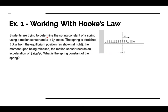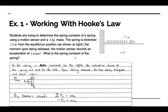Let's look at an example: working with Hooke's Law. Students are trying to determine the spring constant of a spring using a motion sensor and a two-kilogram mass. The spring is stretched 1.5 meters from the equilibrium position. Upon being released, the motion sensor records an acceleration of 1.6 meters per second squared. We want to find the spring constant. Since Hooke's Law involves forces, we'll need Newton's second law. As the spring is stretched to the right, the restorative force acts to the left. The free body diagram shows spring force to the left, normal force upward, and gravity downward. We assume the spring is massless.